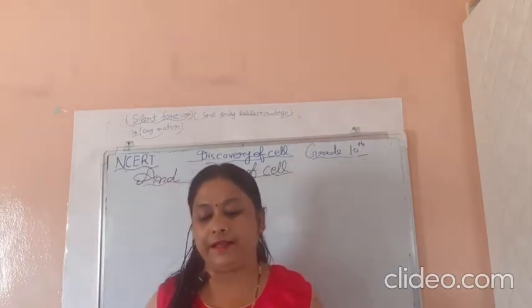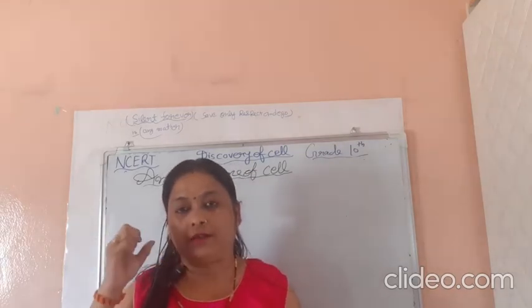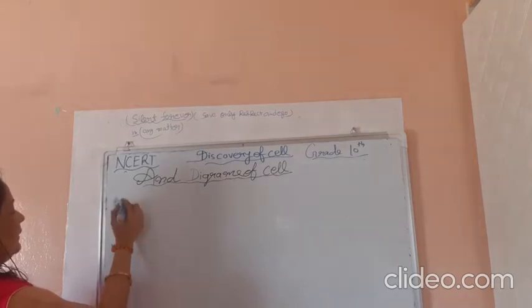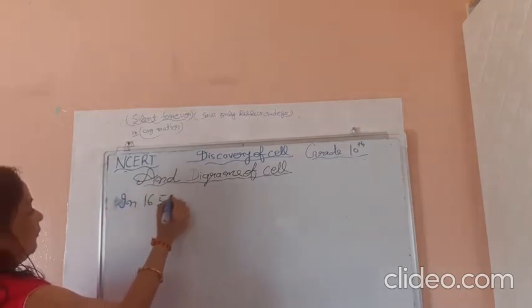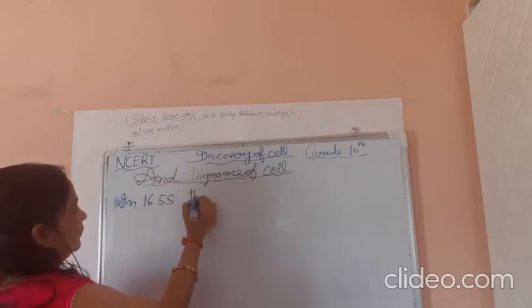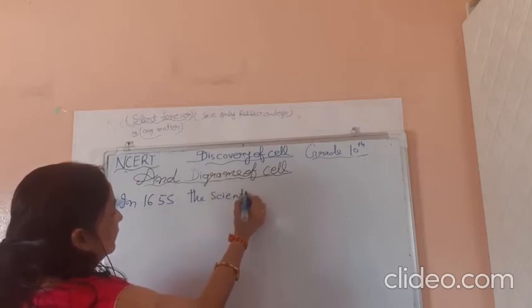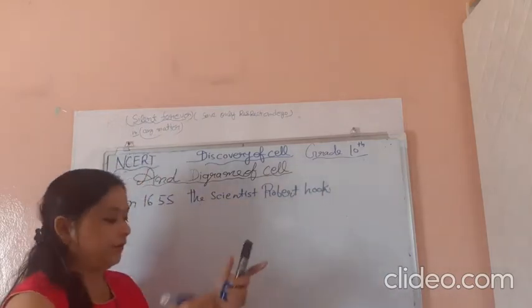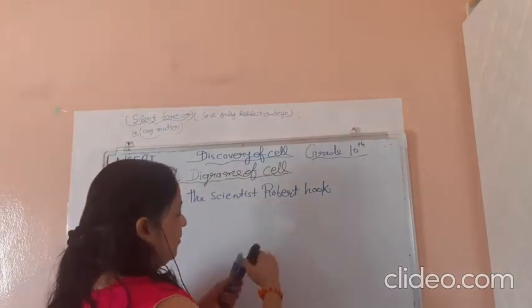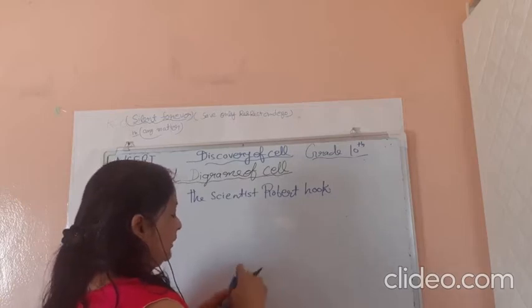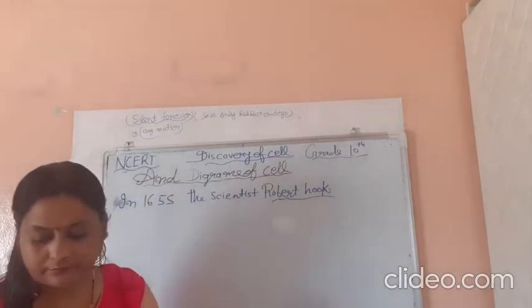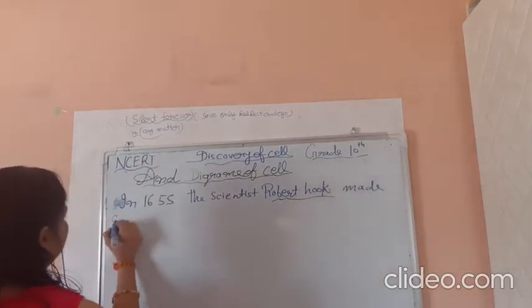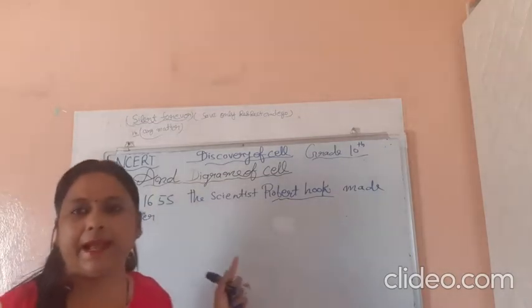Robert Hooke is a scientist who discovered the cell. So, here, firstly, in 1665, the scientist Robert Hooke made an observation.